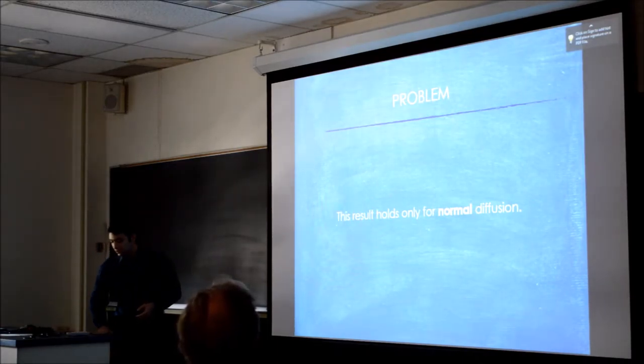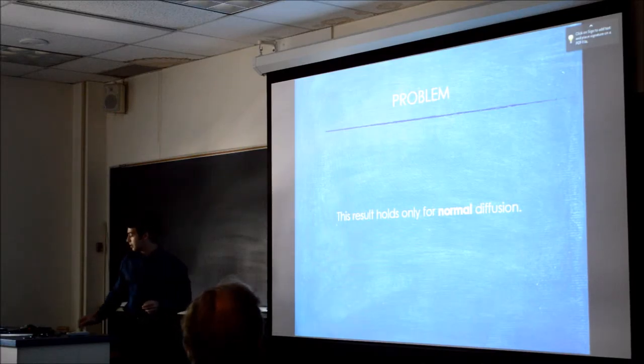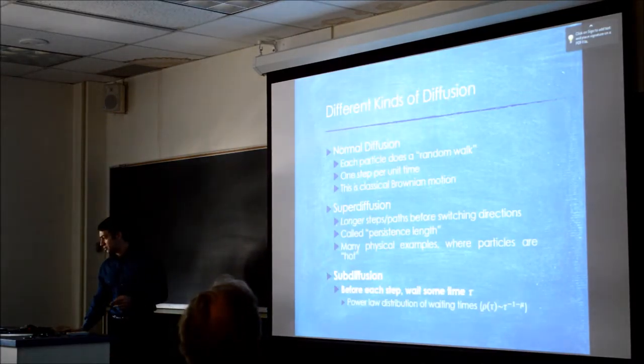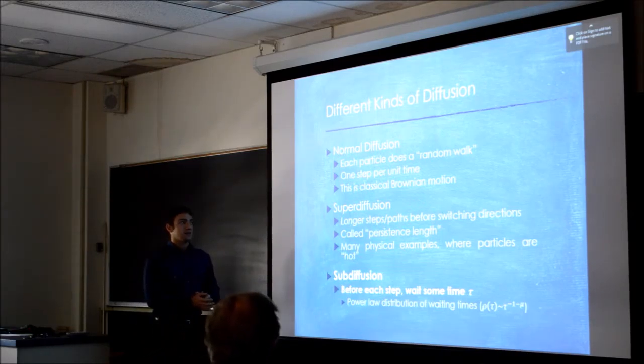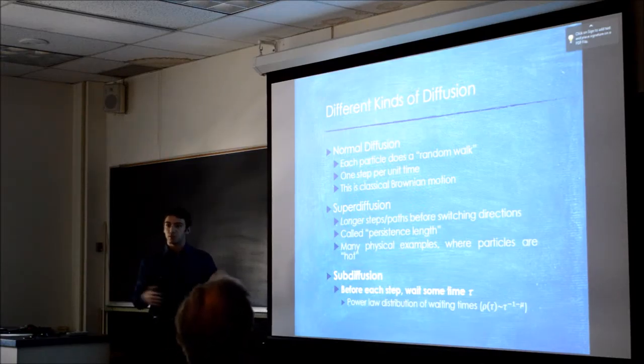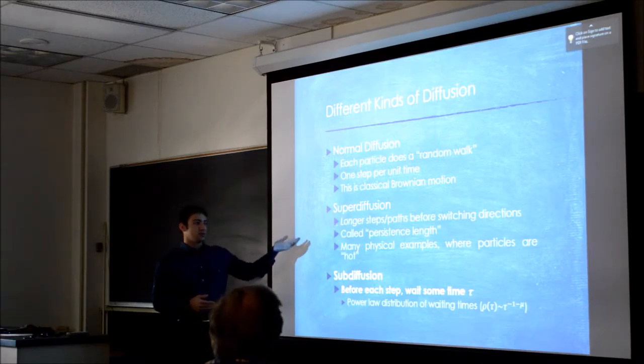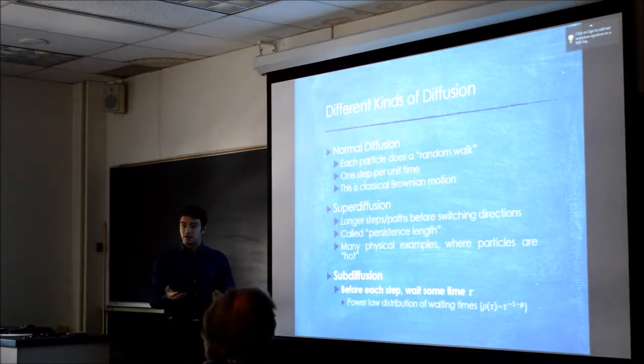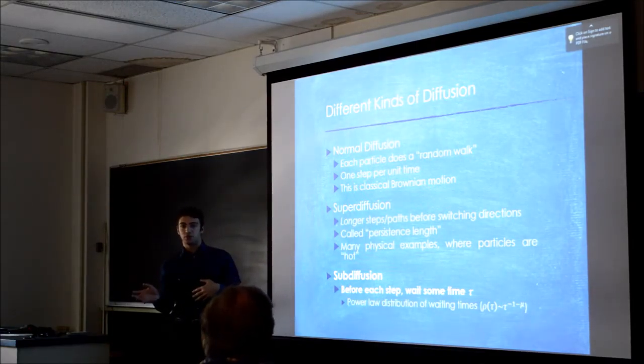Now, the problem with this is that this only holds for normal diffusion—particles that just diffuse around randomly. But there are different kinds of diffusion. There's this normal diffusion, which is essentially a random walker, a normal random walker. So every unit of time, I decide randomly where I'm going to go, and I take one step in that direction. But also, you can have this thing called super diffusion, whereby when I decide to take a step, maybe I'll take two or three steps instead of just one step. Each time I switch directions, I'm going to go some distance, which is called a persistence length, before I stop and switch directions again.